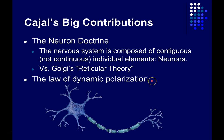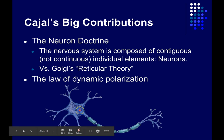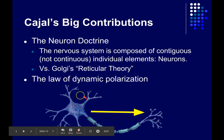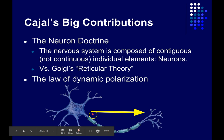Cajal also gave us the law of dynamic polarization. Looking carefully at the structure of individual cells and how they connected, he proposed that each neuron transferred information in only one direction — that the dynamism or movement of each neuron was polarized. There was an information-receiving end — the dendrites and the cell body — and that information, in the form of electrical signals, was transferred in one direction only, down to the synaptic terminals. So information only moves in one direction within a neuron.